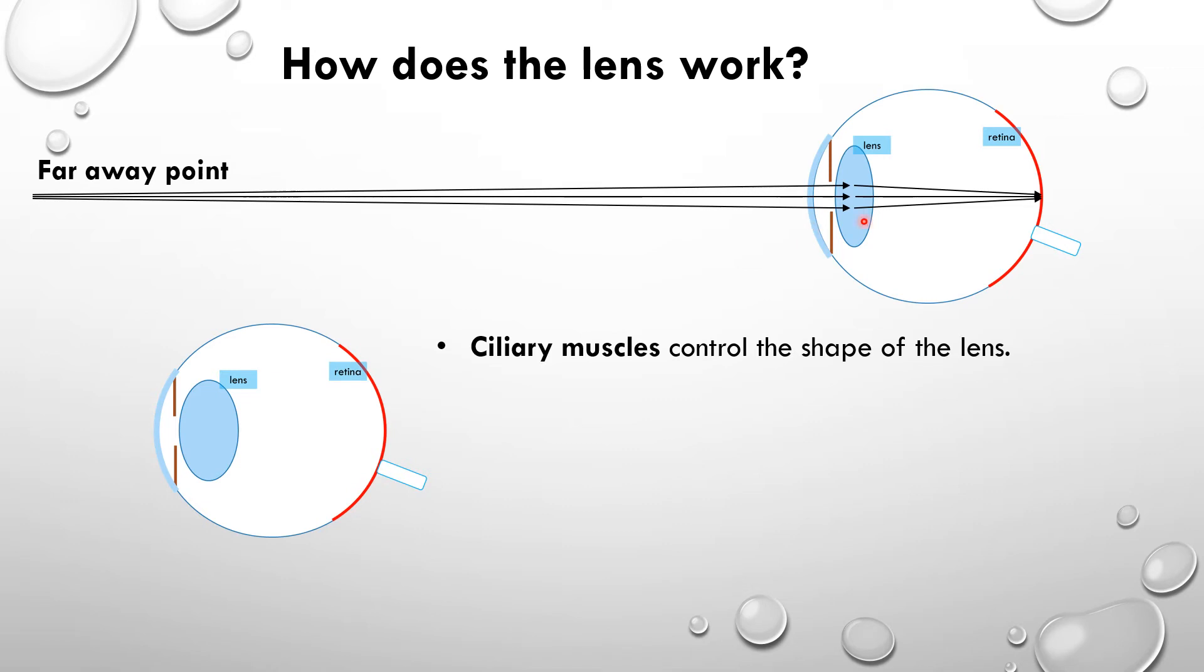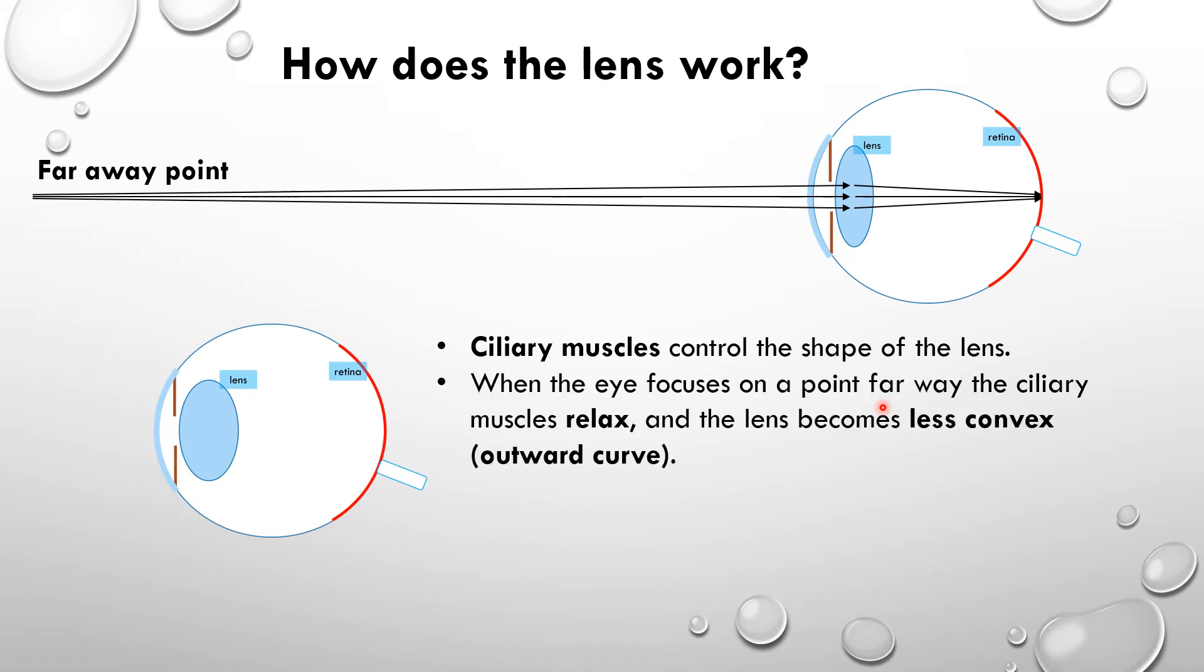Now we have something called the ciliary muscles, and what they do is they control the shape of the lens. If these ciliary muscles that connect to the outside of the lens are relaxed, then the lens becomes less curved, it becomes flatter. Now the curve on the lens is called convex, it's an outward curve, but it's less flat when we're looking far away. See this shape here, it's less of a circle.